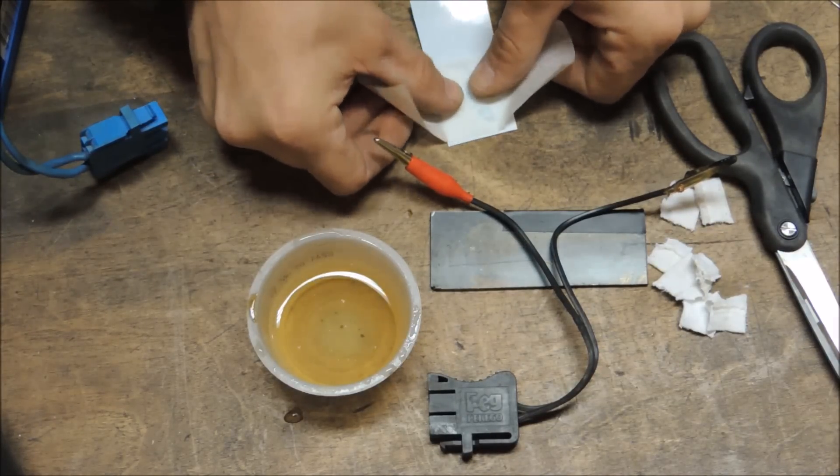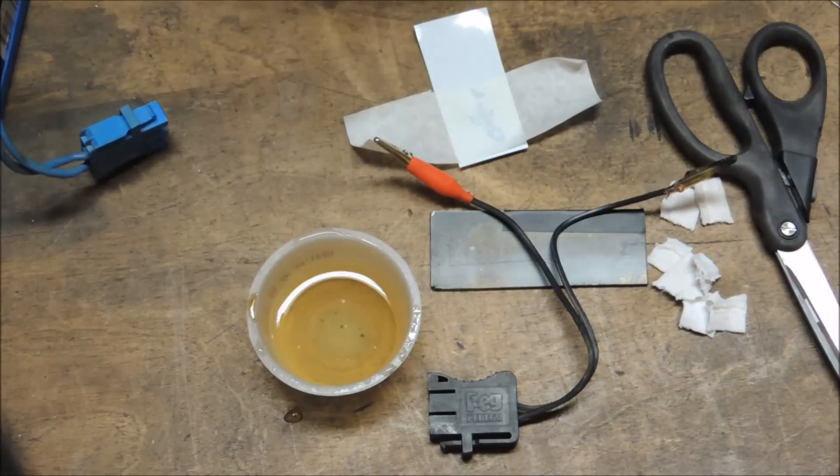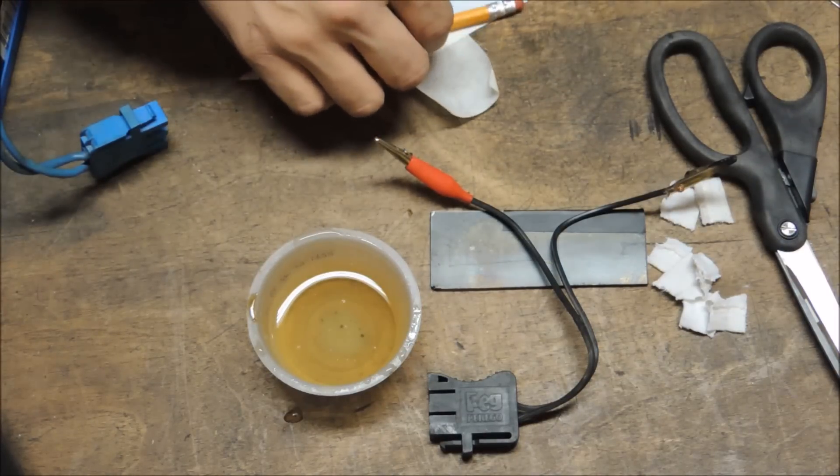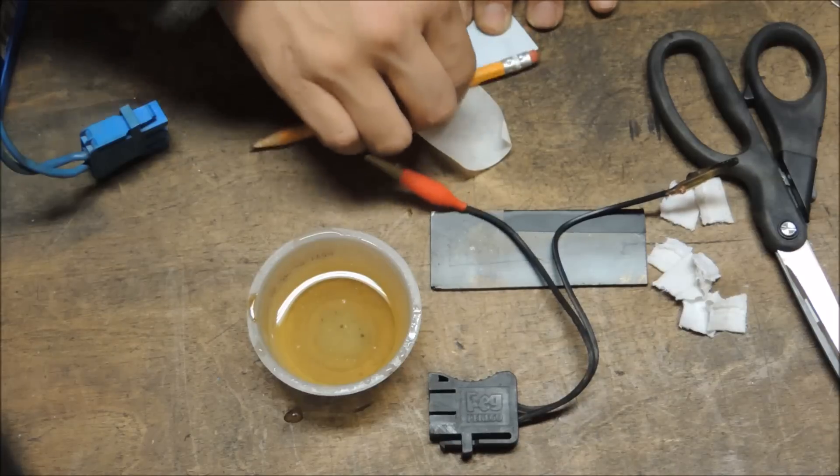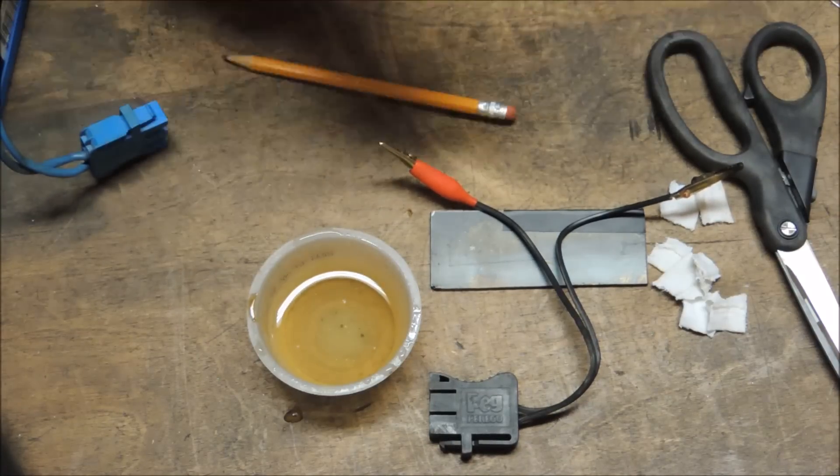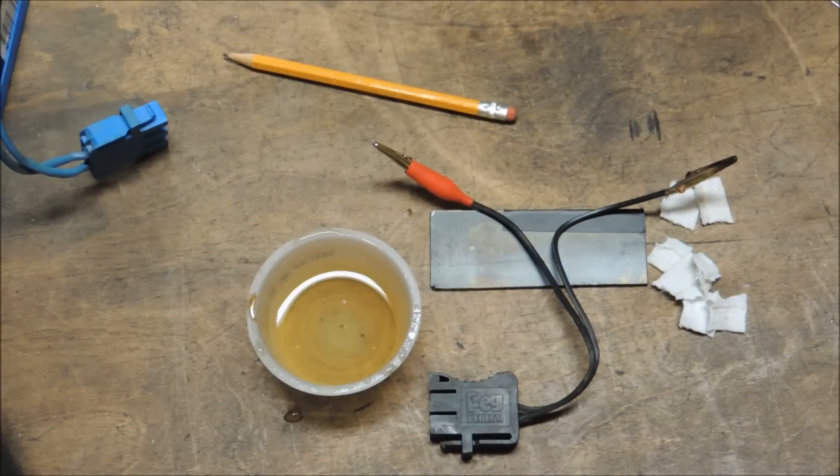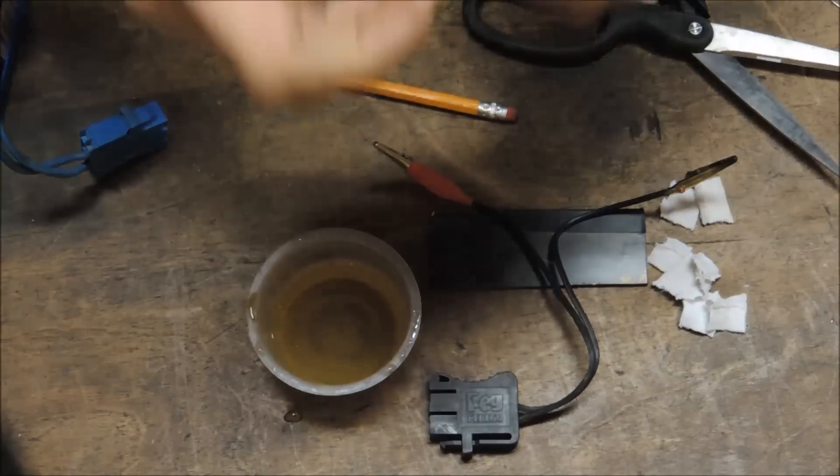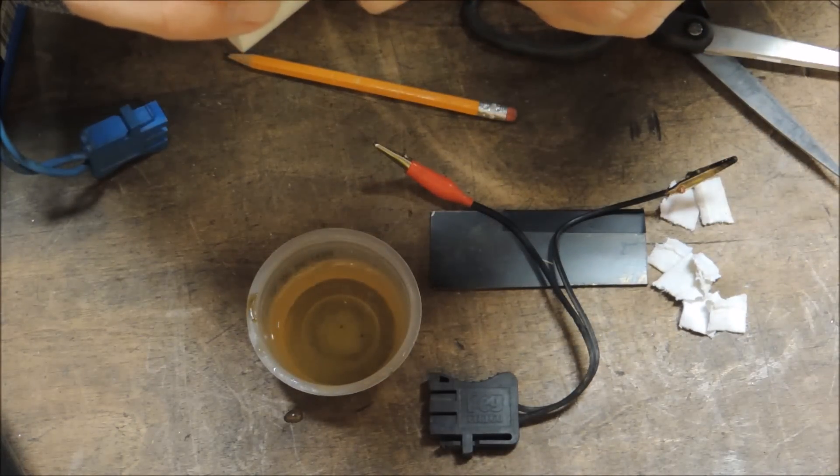So I'm going to take the sticky part here. I'm just going to rub it with a pencil so it'll all be stuck. And now I'm going to peel it off. And I'm going to stick it on my metal.